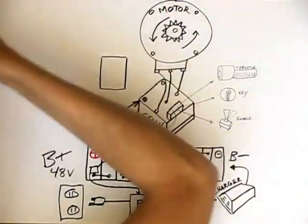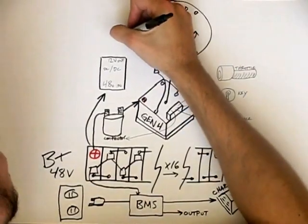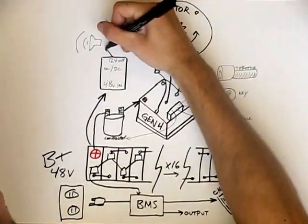Lastly is the DC to DC converter. This takes the 48 volts from the battery pack and drops it to 12 volts for our onboard accessories such as the lights, display lighting, and the horn.